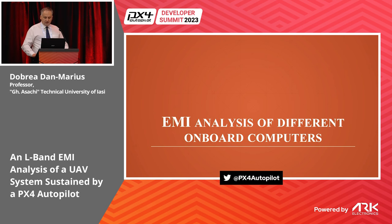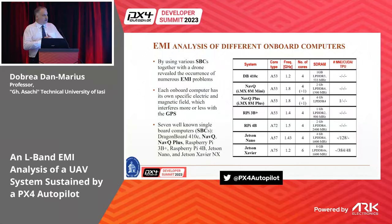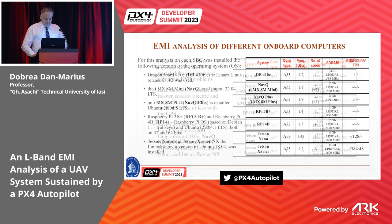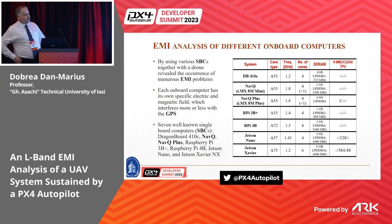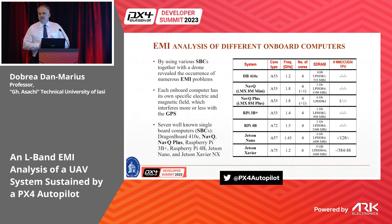Now I will analyze different kinds of onboard computers. The main idea is that each onboard computer generates unique electromagnetic fields that influence drone components in different ways. I analyzed all of these systems. The NavQ and NavQ Plus were used for the Hover Game competition. The Raspberry Pi system needs no introduction. The last two systems are developed by NVIDIA and include units able to process intelligent systems like deep learning neural networks, with very different parameters across these boards.